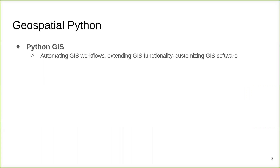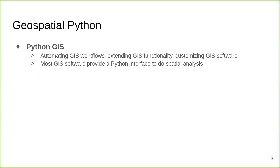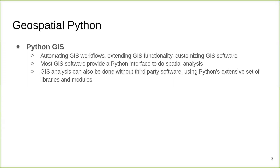Python is a popular language in the geospatial world. It is used, for example, to automate GIS workflows, to extend GIS functionality, or to customize GIS software. Most GIS software, such as ArcGIS, QGIS, or PostGIS, provide a Python interface to do spatial analysis. GIS analysis with Python can also be done without a third-party traditional GIS software, just by utilizing Python's extensive set of libraries and modules.